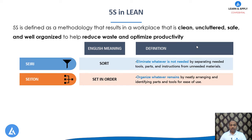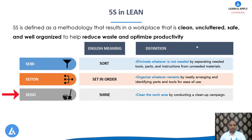The second S is Seiton; the meaning of Seiton is Set in Order. In this step, whatever was needed from the first step, we organize by neatly arranging and identifying parts and tools for ease of use — identifying the place for everything and ensuring that everything is in its place. The third step is Seiso; the meaning of Seiso is Shine. In this step, we clean the work area by conducting a cleanup campaign.